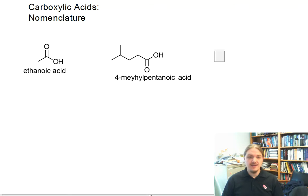If you have a molecule that has more than one carboxylic acid, you can name them as dioic or trioic acids. So for example, this molecule here is a propanedioic acid.